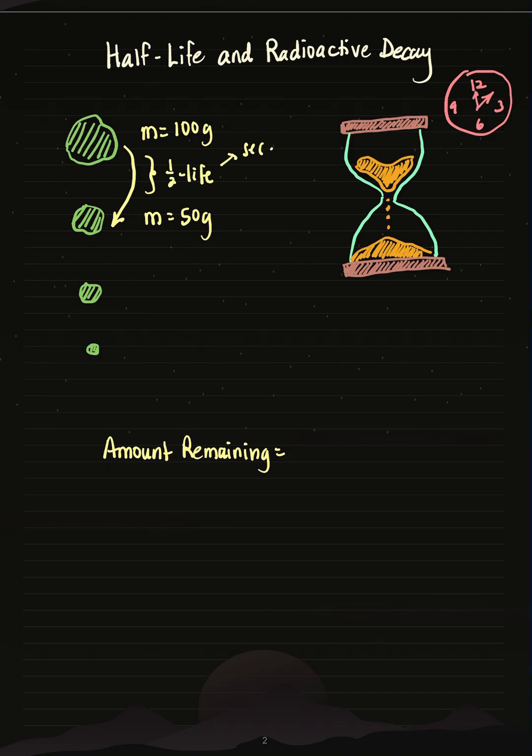And it can be measured in seconds, or minutes, or hours, so it depends on the radioactive element. Each substance will decay at a different half-life.